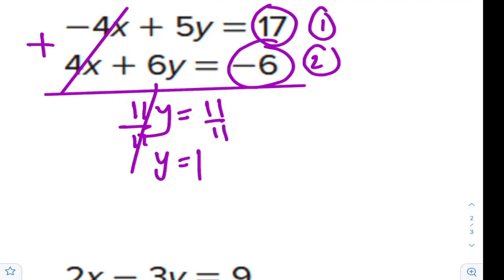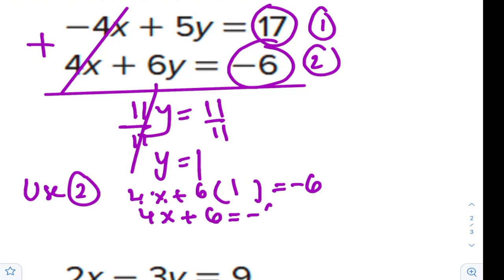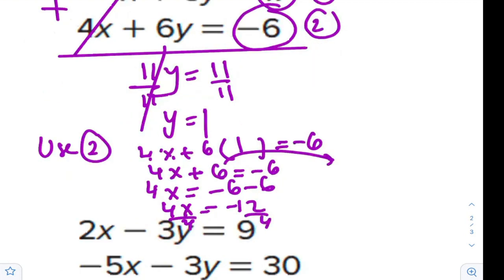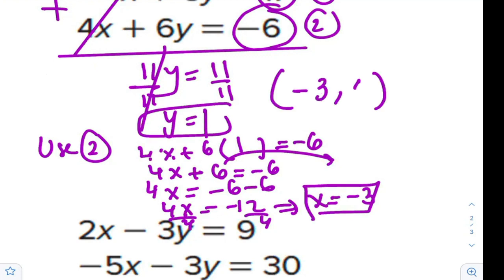When you divide, it will be 1. And you will use this one in any of the equations. I'm deciding to use equation 2. 4x plus 6, I will replace the y by 1, and I will solve the equation as I have done before. 4x equals negative 6 minus 6, so 4x is negative 12. Dividing both sides by 4, so x is negative 3. By the end, you have to write the solution in ordered pair.